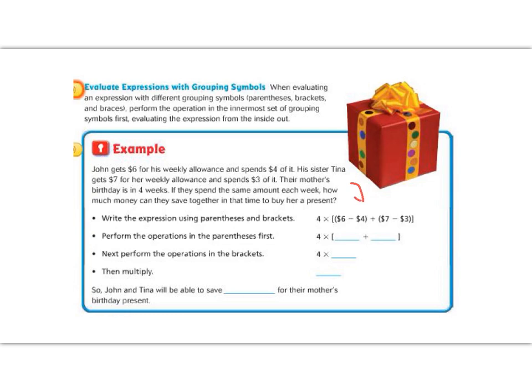They've already written all this out in a numerical expression for us. Let's look at it. We see 4 times brackets, parentheses 6 minus 4, plus parentheses 7 minus 3. So if we look up here, John gets $6, and this first part of our numerical expression is $6. So this is John. His sister Tina gets $7, and our second bracket has $7. So this is Tina.